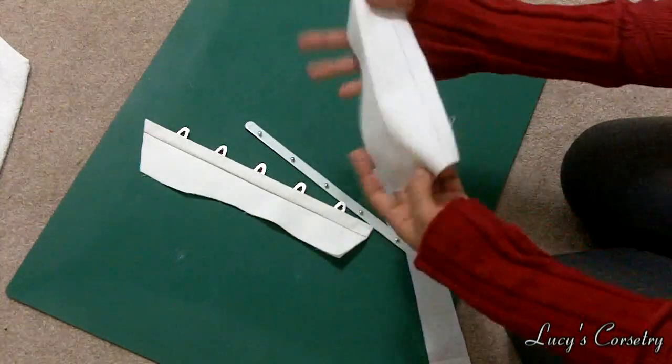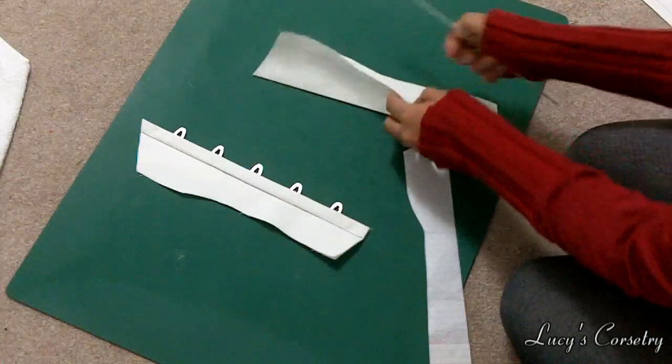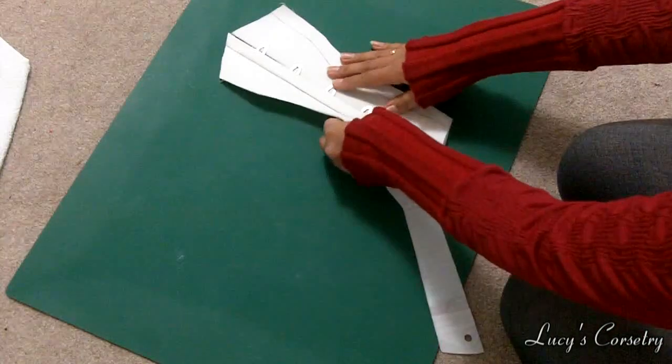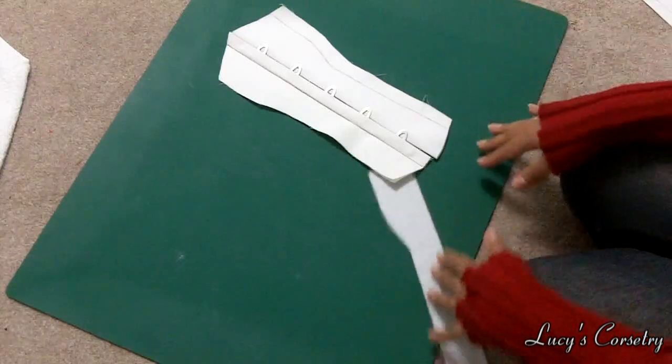Then you would iron it like I already have here, stick the busk in, make sure everything matches up like so and then poke your holes and secure the line of stitching on the other side of the busk and there you go.